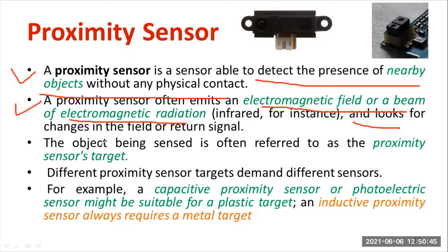It is majorly based on the principle of electromagnetic radiation — it emits electromagnetic radiation and identifies whether objects are nearby or not. The object being sensed is referred to as the proximity sensor's target. There will be an object considered as a proximity target.